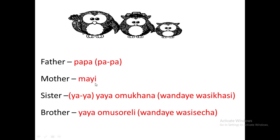For sister, we first use the term that is used to show a sibling, which is 'yaya'. Because she's female, we say 'yaya omuhana', meaning a sibling who is female. We can also use the words 'wandae wasihasi', which shows that it is a sibling who is a girl. This is mostly used by a person who is describing your sister — someone talking about your sister will say 'wandae wasihasi'.